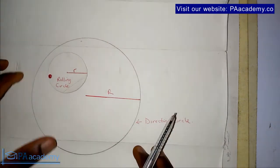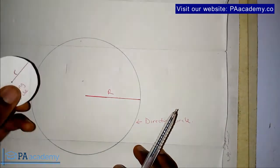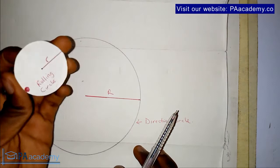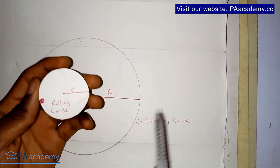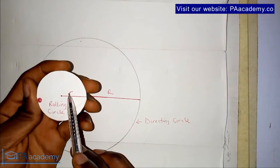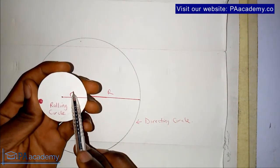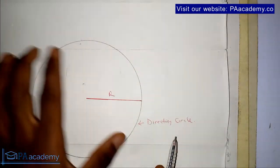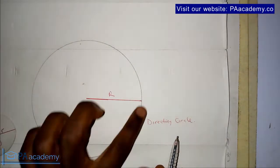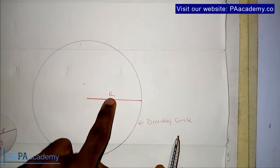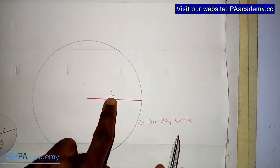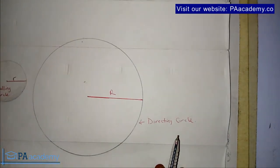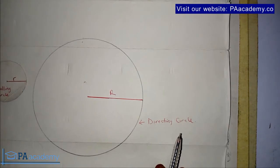Now looking at what I have here, I use this small circle as the rolling circle with radius small r. The radius of the directing circle is the big circle you see on this sheet with radius capital R. So those are the two circles we are going to be using to explain epicycloid and hypocycloid.